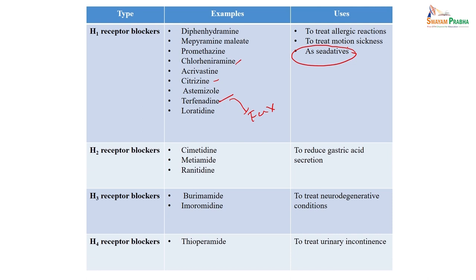H2 blockers most commonly used are cimetidine, methimamide, and ranitidine — but the most commonly used H2 blocker is ranitidine. Although cimetidine was initially developed as an H2 blocker, nowadays it is not used because it has a potent anti-androgenic action. Ranitidine is a very potent drug used for gastritis, peptic ulcers, or GI disorders because it reduces gastric acid secretion.